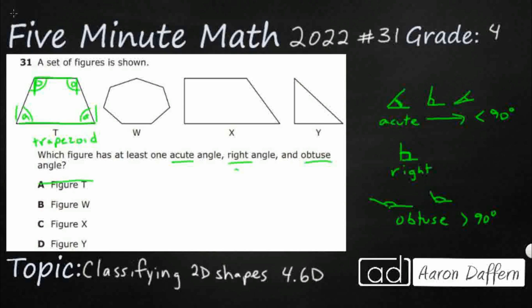So if I were to look at W, we've got one, two, three, four, five, six, seven sides. We don't see that very often. Heptagon. Not that we really need to know the name of that shape. We don't really draw heptagons very often.